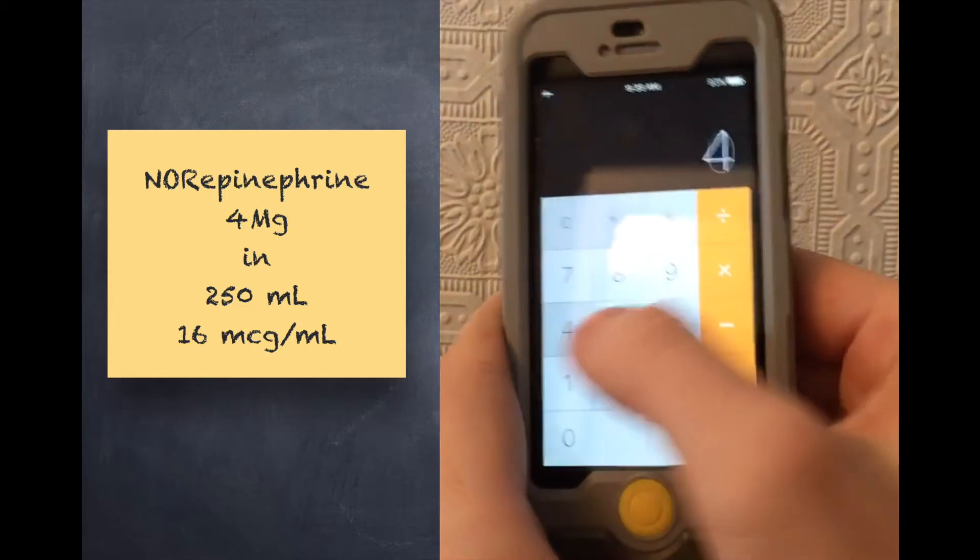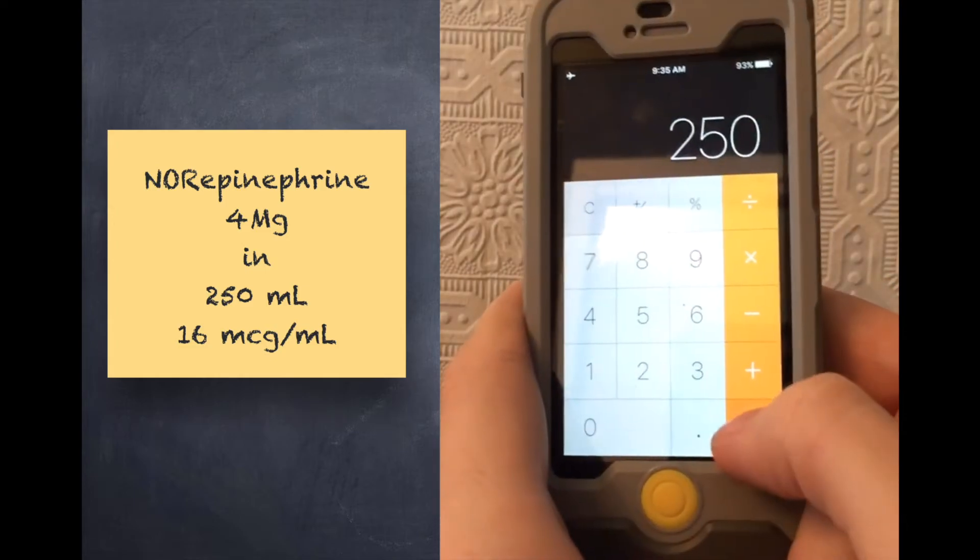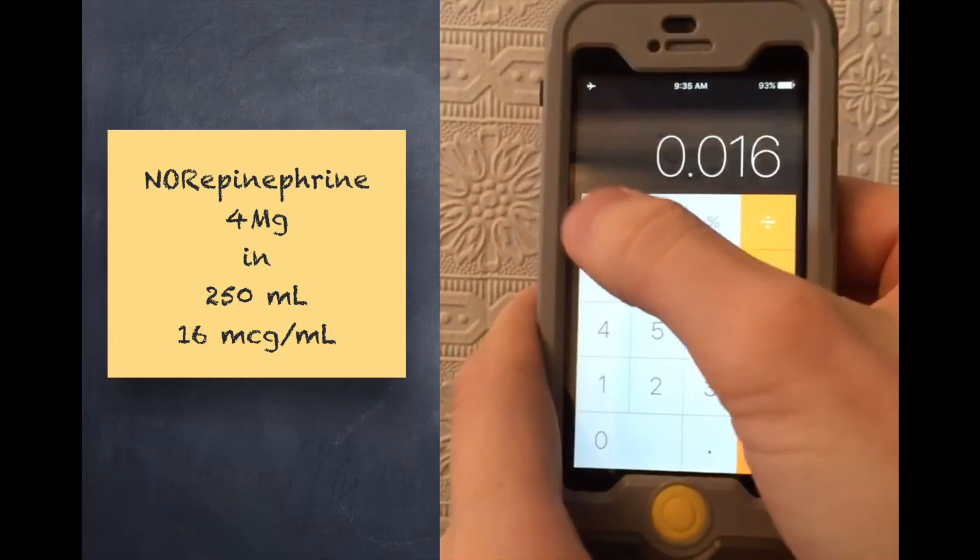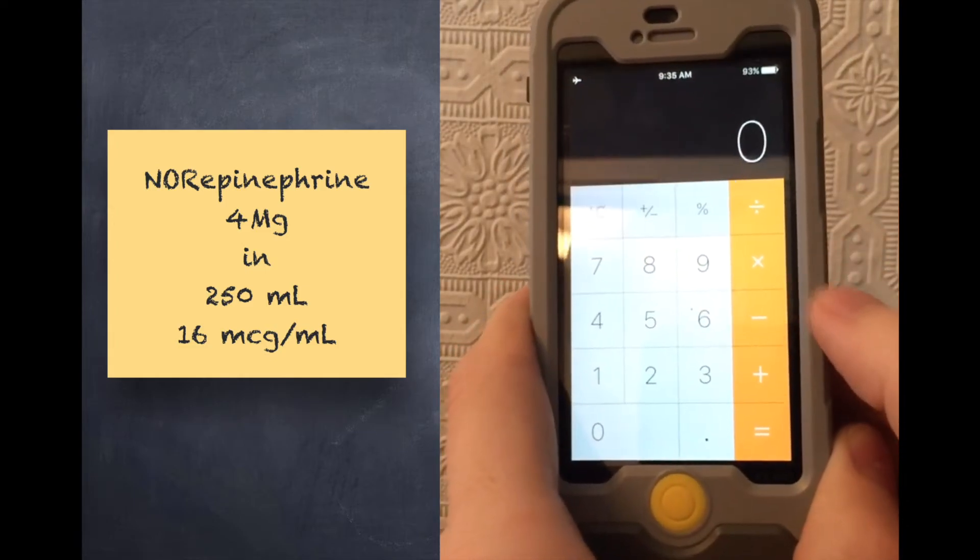And that way you'll be able to do the rest of your calculation on the calculator. So here's how it would look. Four divided by 250, I'd go ahead and write that down, 16 mics per milliliter at the bottom, and then I can do the rest of my calculation.